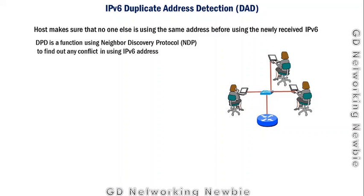Duplicate Address Detection provides a mechanism to make sure that no one else is using the same address. Before actually using the IPv6 address that has been assigned to it, a host machine must verify that no one else on the network is using exactly the same IPv6 address.